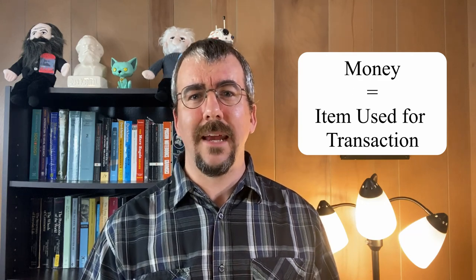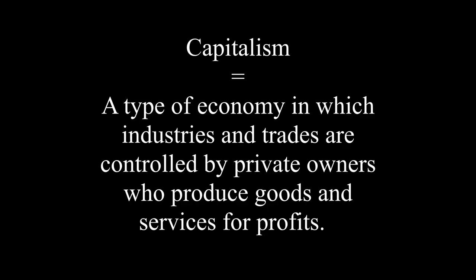All the economy is, is a system of production and exchange that provides material goods to people within a group. In other words, people grow, collect, or build stuff and then trade it with other people for other stuff that they might need. All money is, is a transaction. So instead of bringing a sack of potatoes to the clothing store to purchase clothes, you instead provide that person selling clothes money, which can be in material form such as paper, metal, or plastic, or it can be in digital form. Money has become a central part in our current type of economy, which can be defined as capitalism — a type of economy in which industries and trades are controlled by private owners who produce goods and services for profits.